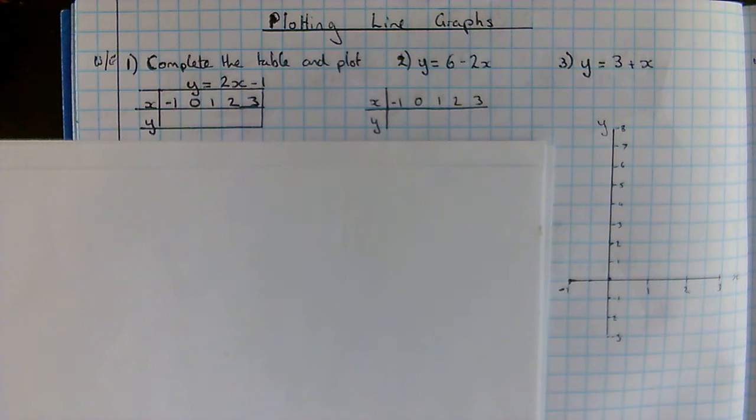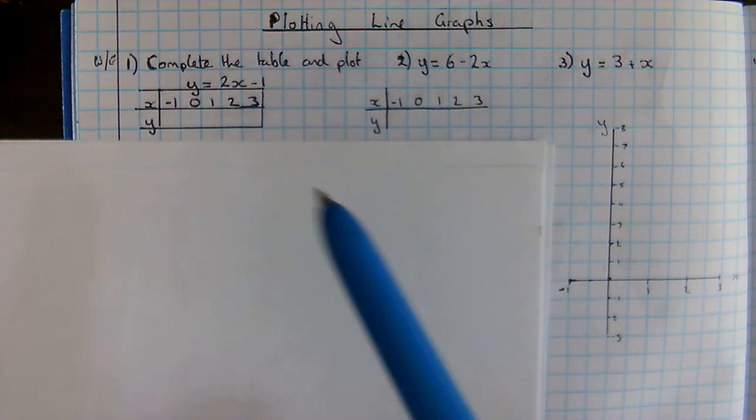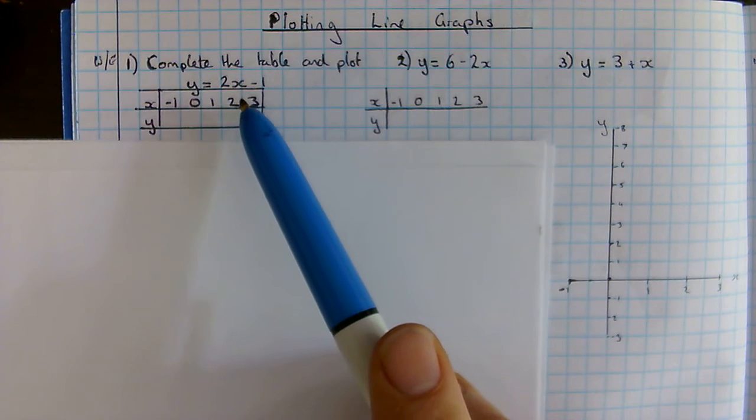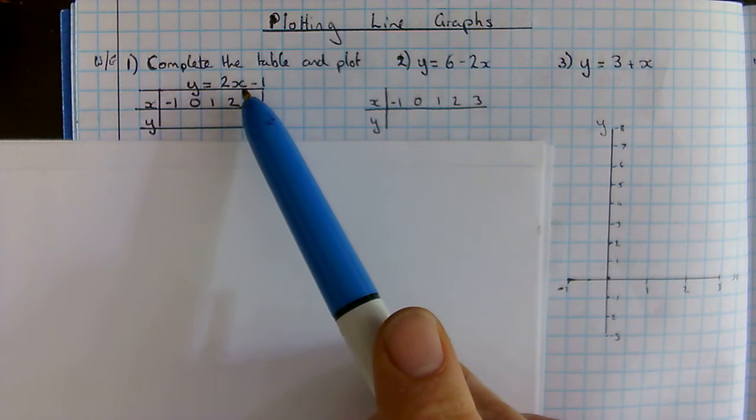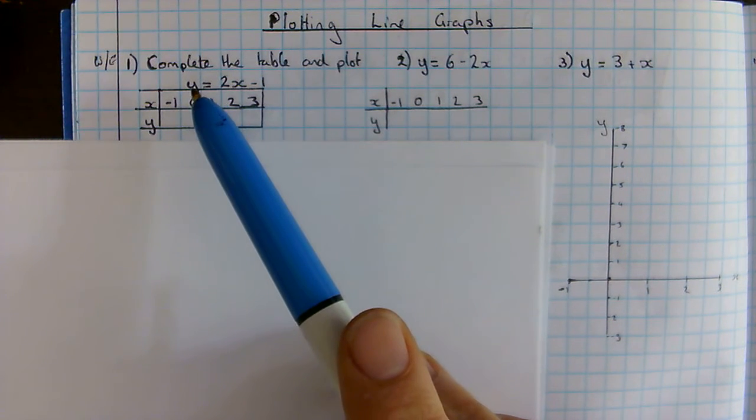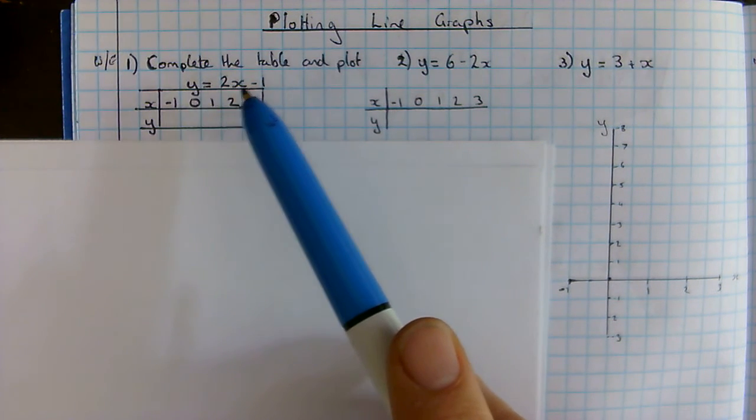We're going to start by looking at how we plot line graphs. A line graph is always given as a formula which connects two variables, normally called x (the horizontal) and y (the vertical). We've been given an equation here, y equals 2x plus 1, and each equation can be drawn as a picture, as a line. What we're going to try and do is draw the line that connects y equals 2x plus 1.